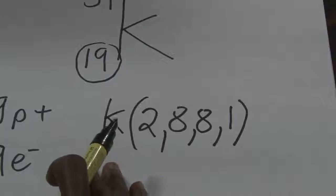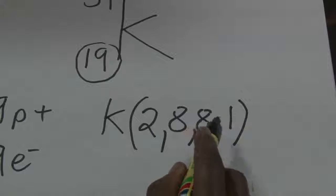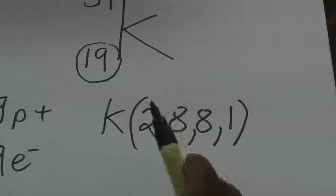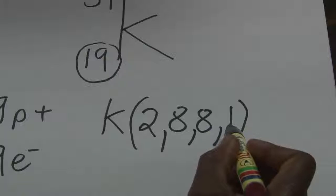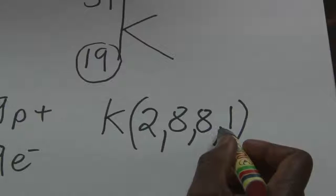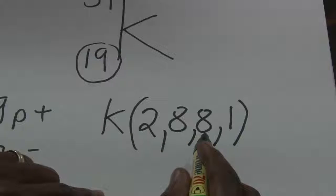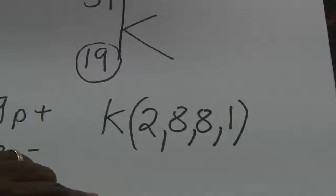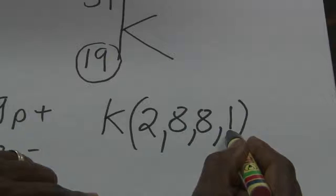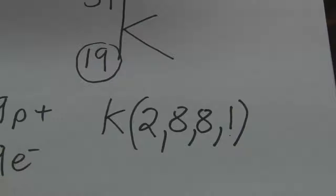From this electronic configuration, one can tell that potassium has four shells. We can also say that potassium is in group number one because the last shell contains one electron. It's very important to remember: the number of shells gives you the period number — period one, two, three, four — and then the last shell tells you which group potassium belongs to. So it's in group one on your far left.